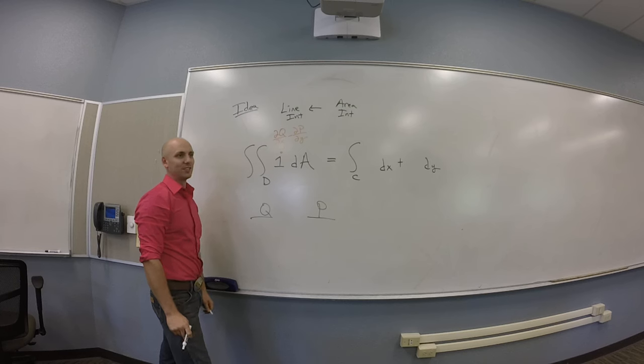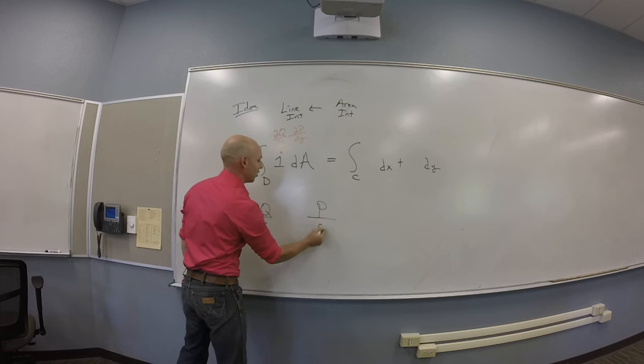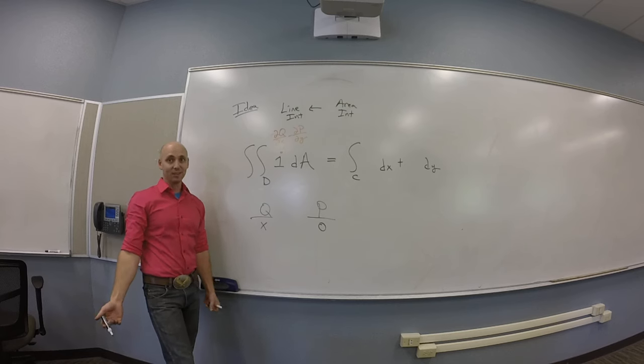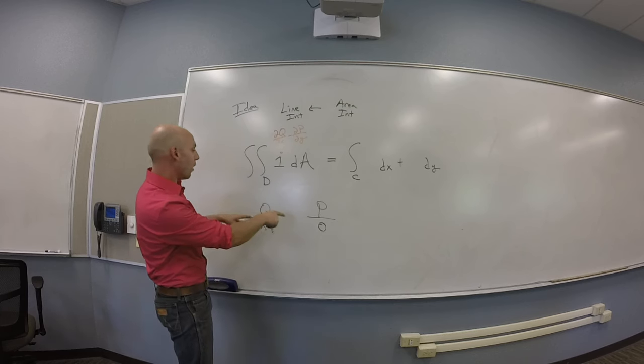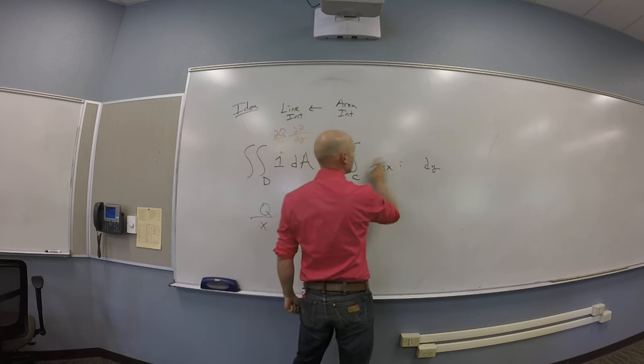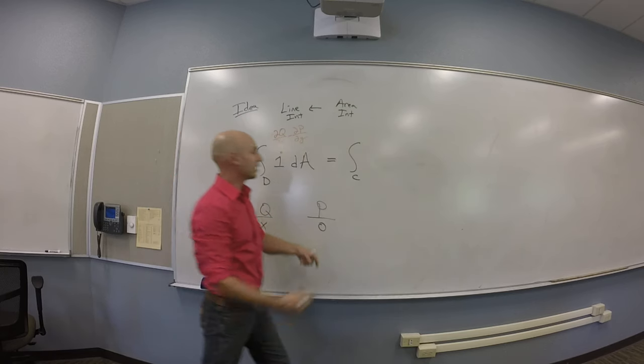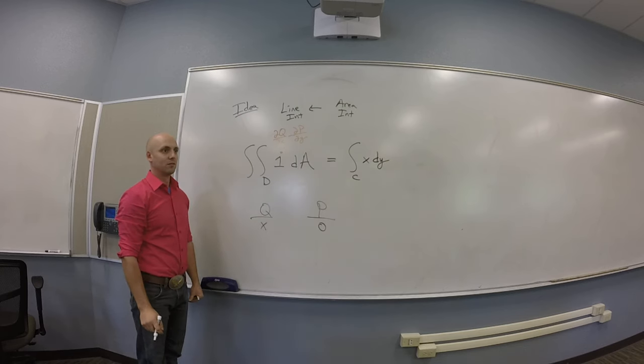So I'm going to make some choices for Q and P. What's the most obvious choice? Make Q equal X. And P, yeah, zero is probably the easiest one. Keep in mind, this is a tool you're making. You may as well make it easy to use. So one possible choice of P and Q is X and zero. So I could write this as the integral over C of X dy. You guys see that?